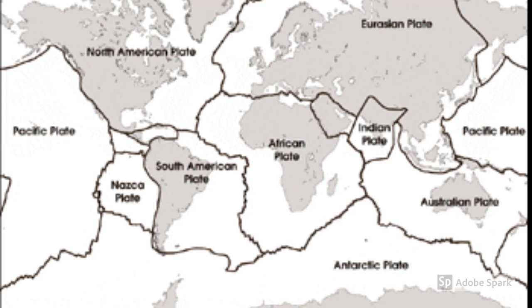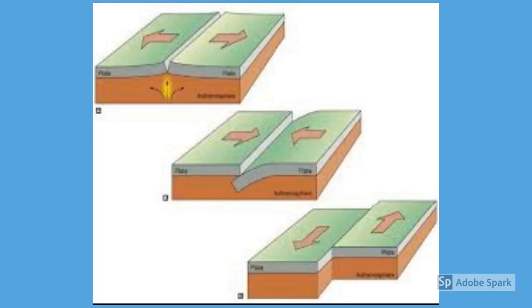There are three major types of plate boundaries: divergent boundaries, convergent boundaries, and transform fault boundaries. The most common are the divergent boundaries, where the plates diverge from each other. This happens at mid-ocean ridges, and the stretching motion makes the lithosphere thin. The reduced pressure allows soft rock to melt, and magma pushes up through the seafloor. The separation of plates and ascent of magma breaks the rocks and can cause earthquakes just below these divergent plate boundaries.